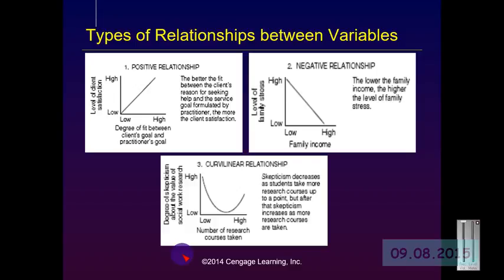When we have a negative relationship, what that means is that one variable goes up and the other goes down. In the second image of the slide, it is measuring the level of family income to the level of family stress — as family income goes up, family stress becomes lower, or vice versa. Typically, charts that examine the linear relationship between variables are read from left to right. When there is a line that slopes upward from left to right, the relationship is positive, and when it slopes downward from left to right, there is a negative relationship.